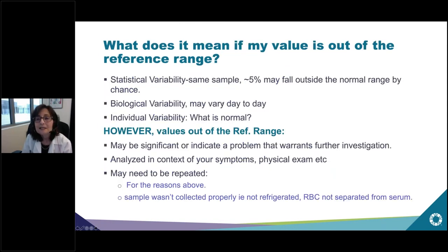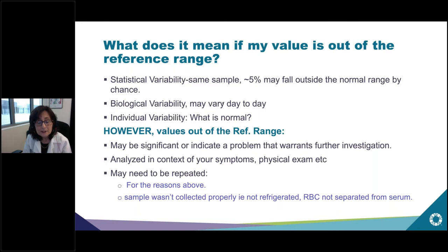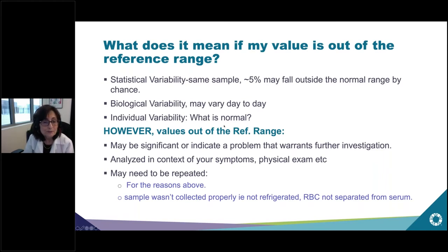What does it mean if your value is out of the reference range? It could just be due to statistical variability — if you take the exact same sample and run it twice, five percent may just fall outside the reference range by chance. There may be biological variability that is normal — results can vary from day to day. There may also be individual variability in what is normal. However, values out of the reference range may also indicate a problem warranting further investigation.